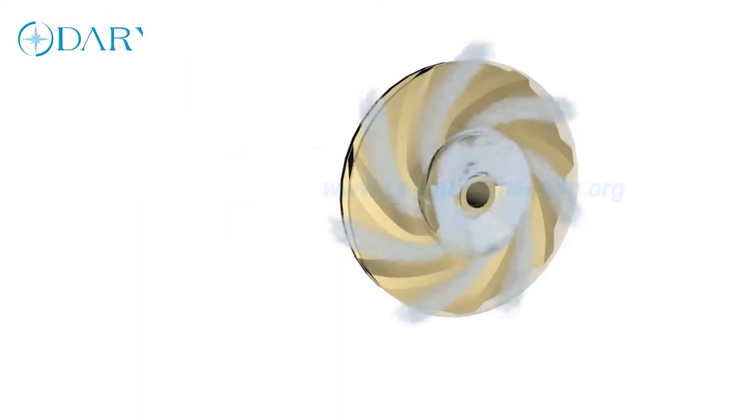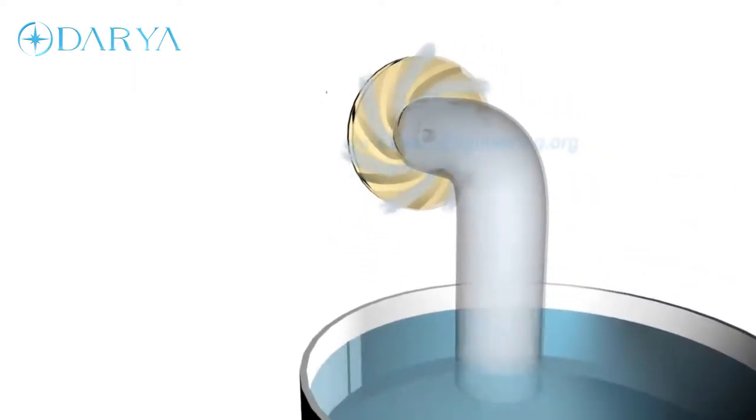At suction side, water is getting displaced, so a negative pressure will be induced at eye. Such low pressure helps in sucking fresh water stream into the system again, and this process continues.